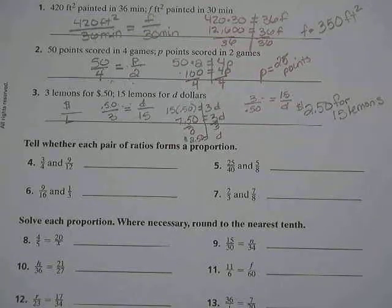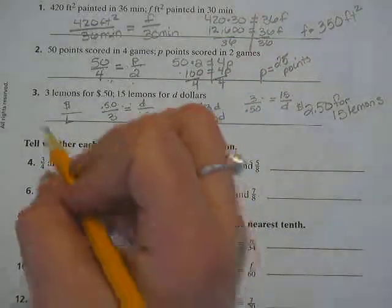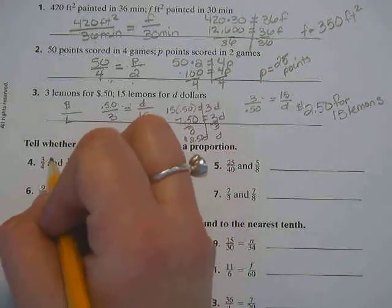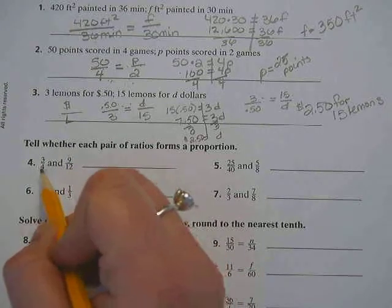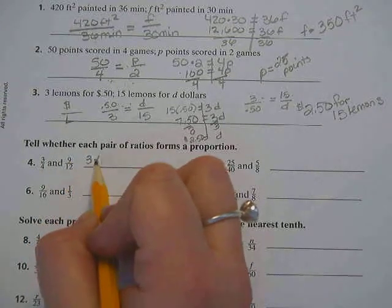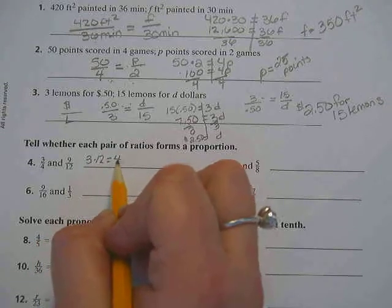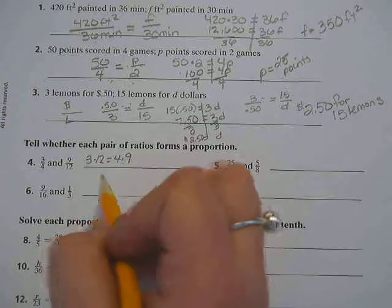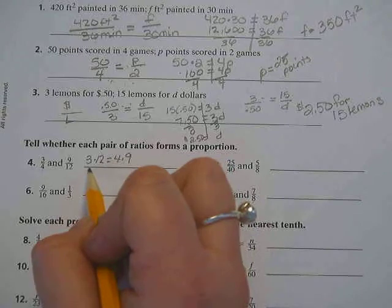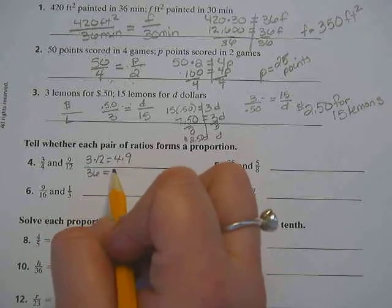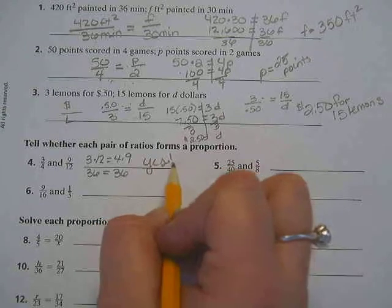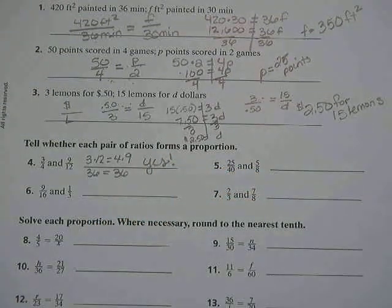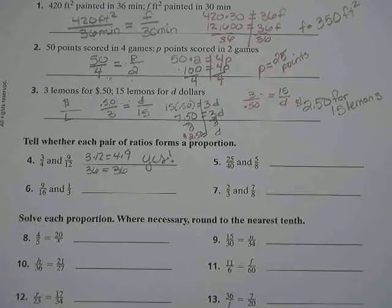Alright, now we want to tell whether each pair of ratios forms a proportion. So we're going to check the cross products. So this is where you say to yourself, Okay, does 3 times 12 equal 4 times 9? Yes. So let's write it out. 3 times 12, 4 times 9. What is 3 times 12? 36. Does that equal 36? So we write yes. Yes. That is a proportion.